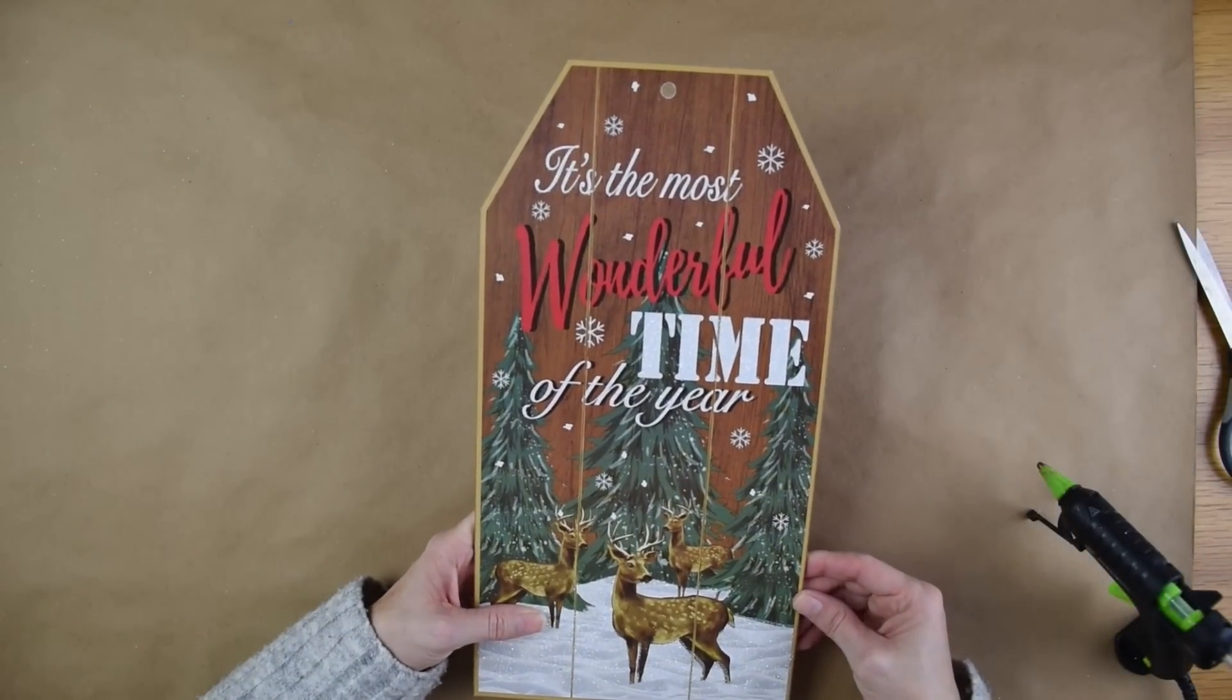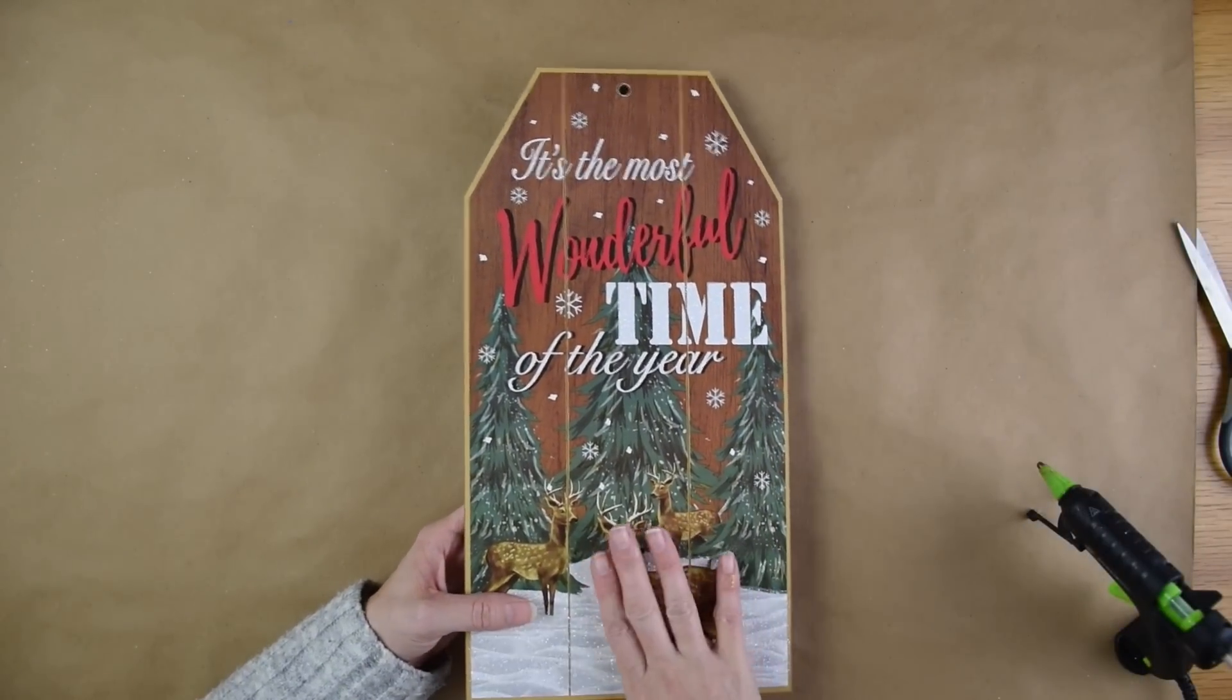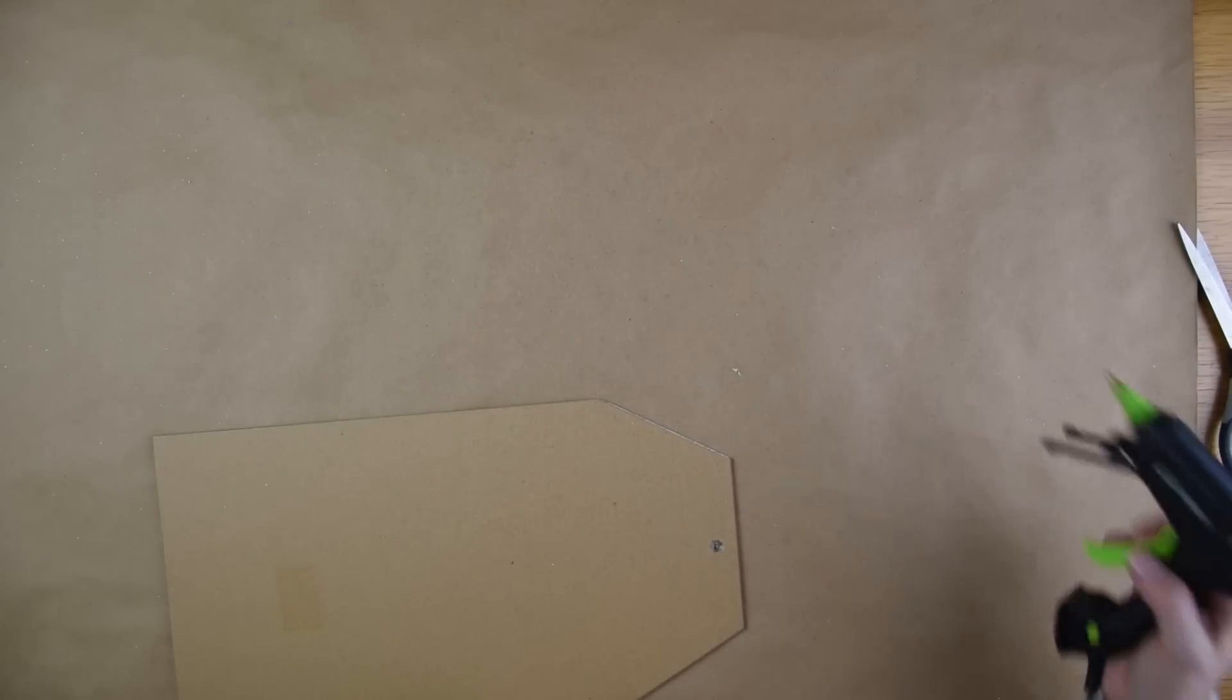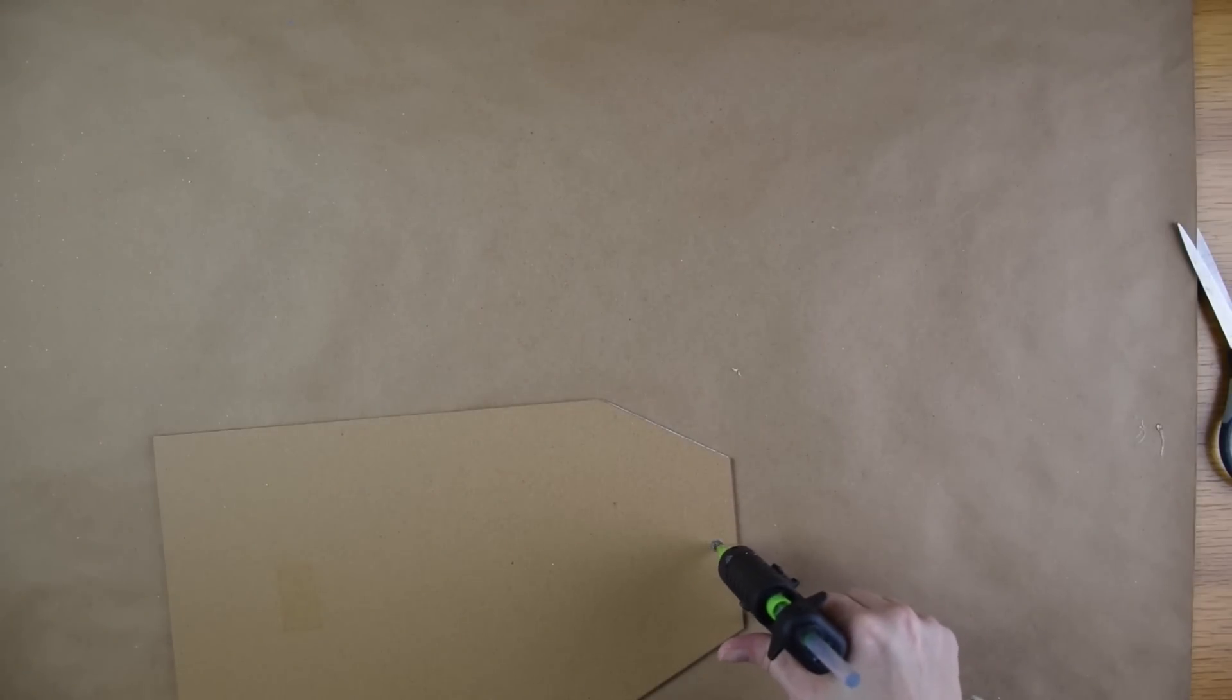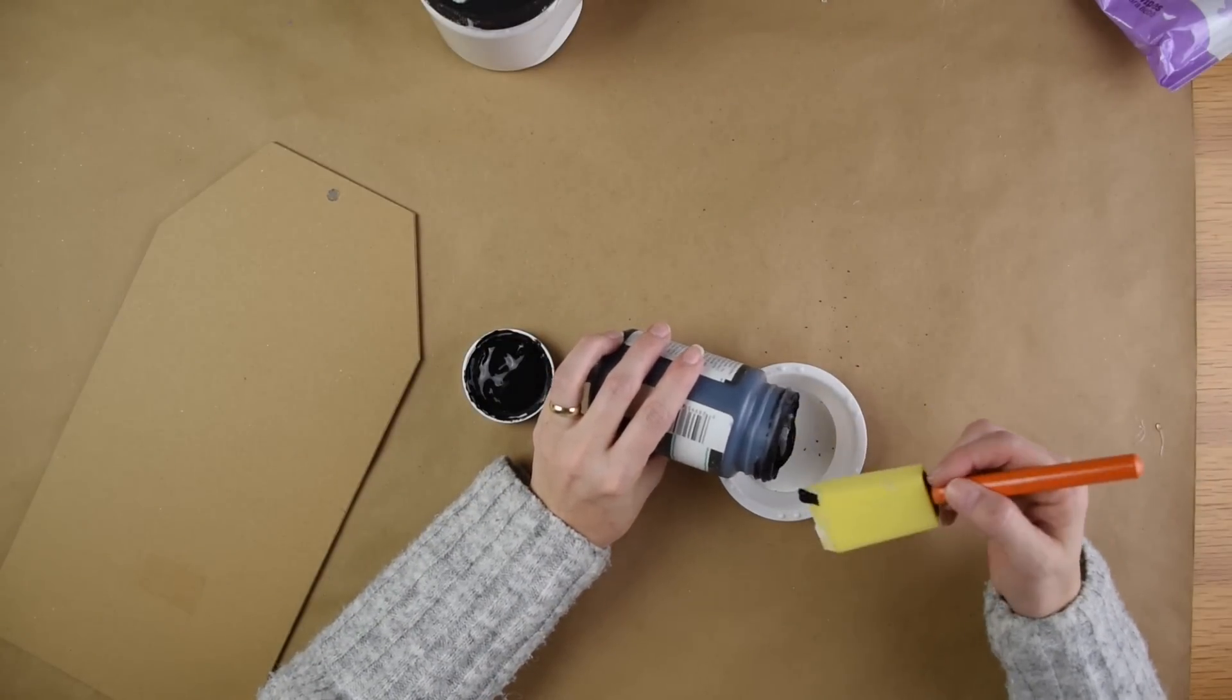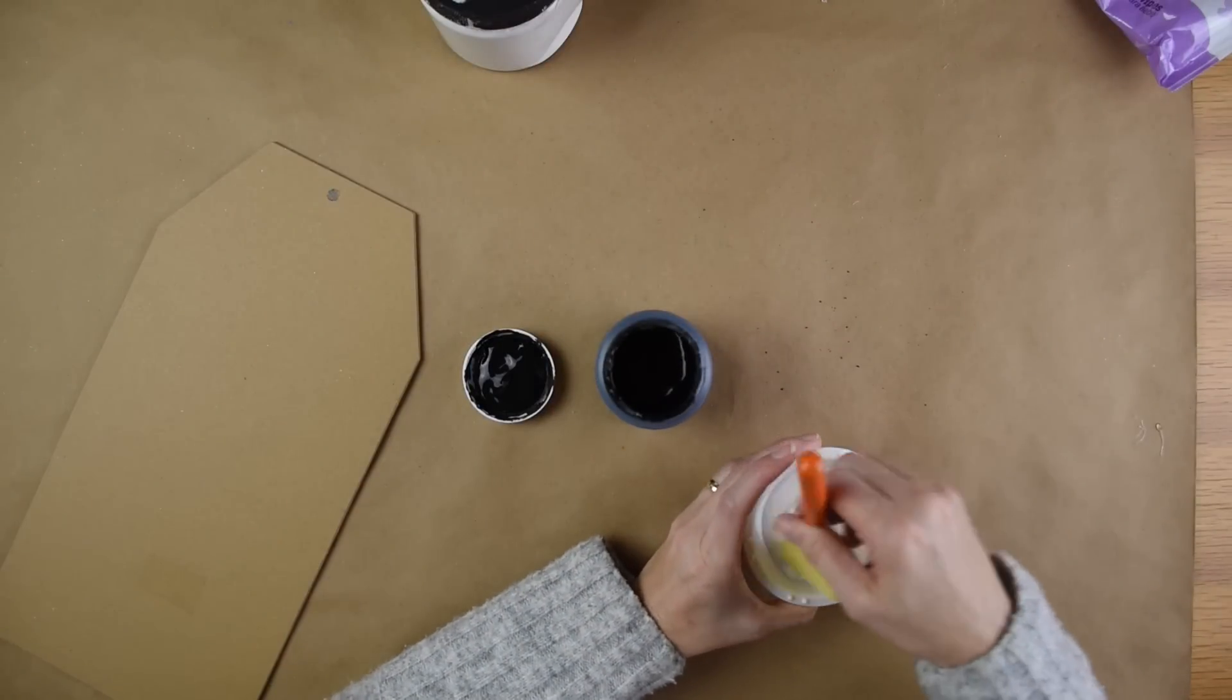So I'm going to take that Dollar Tree Christmas sign and I am going to use the back side of it for my project. Since I'm not going to be hanging up my sign I want to get rid of this hole so I'm going to be using my hot glue gun and just going ahead and filling it up with hot glue. So now I'm going to take my white paint and my black paint and I'm going to go ahead and mix that together to make a light gray.